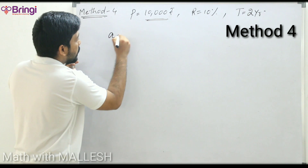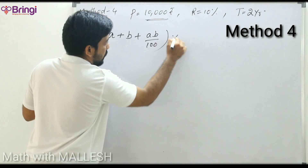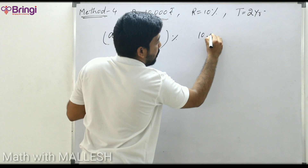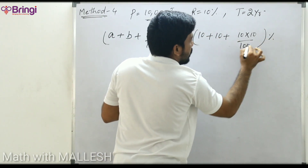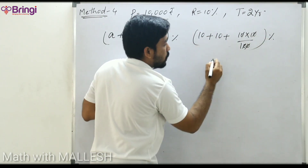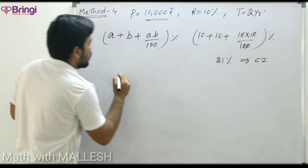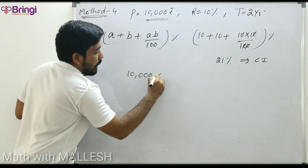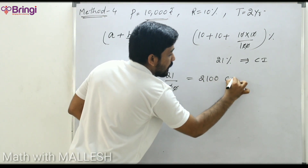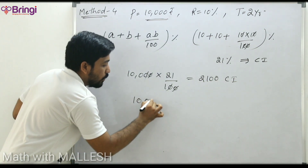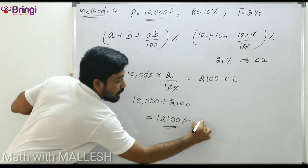Method 4: Percentage method. The formula is a + b + (a×b)/100 percentage. Here a = 10%, b = 10%, so 10 + 10 + (10×10)/100 = 10 + 10 + 1 = 21%. So 21% is the compound interest. Take principal 10,000 and find 21% — that gives 2,100 as compound interest and 12,100 as the amount.